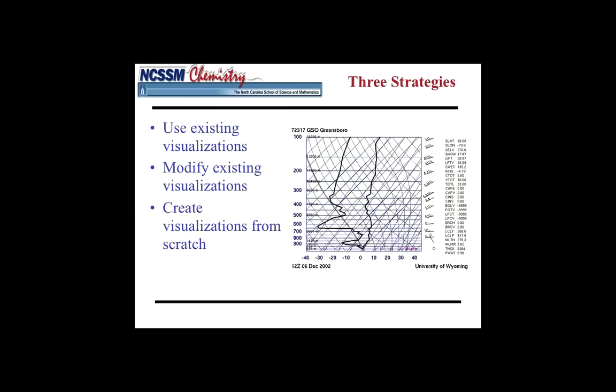So this would be an example where we have some data, the data is visualized, we get a chart that looks like this. And a meteorologist can look at this and say an awful lot of pretty intelligent things about what the weather is doing, at least in Greensboro, North Carolina.